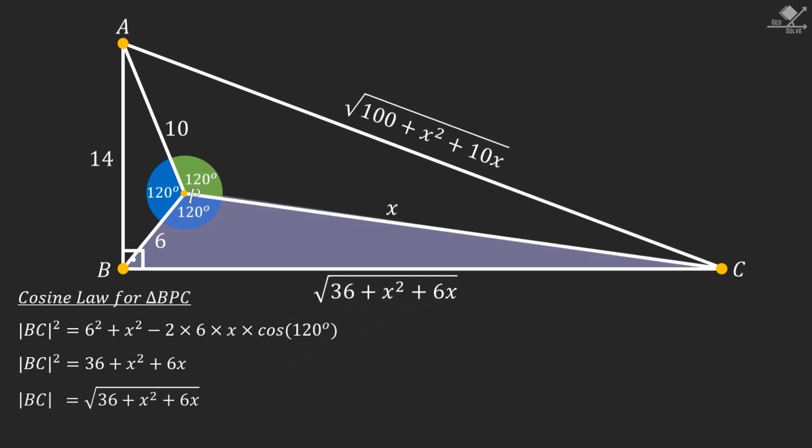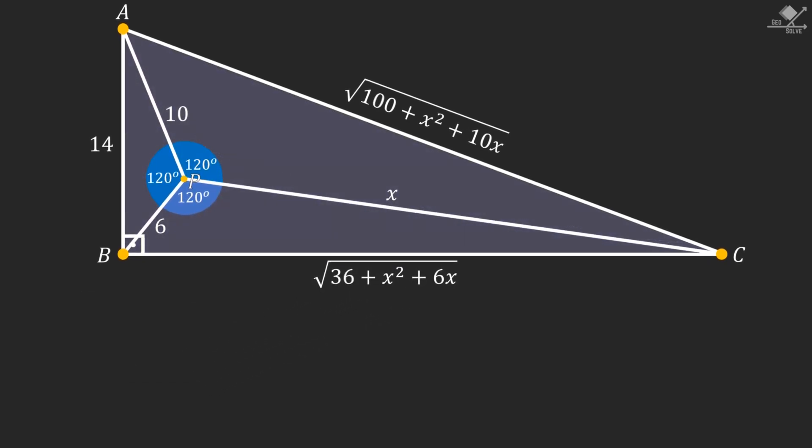Now we have this right-angled triangle, and we know the side lengths in terms of x. Let's apply Pythagorean theorem on this triangle ABC. So our first term will be 14 squared plus the square of this term here, and that will be equal to square of the hypotenuse. Here 14 squared will be 196.